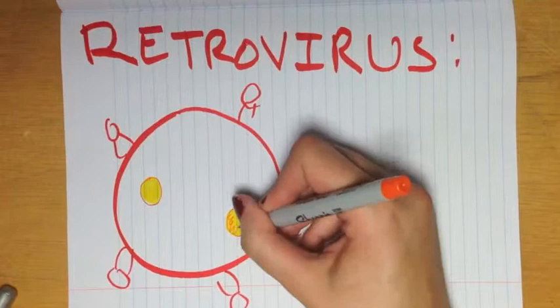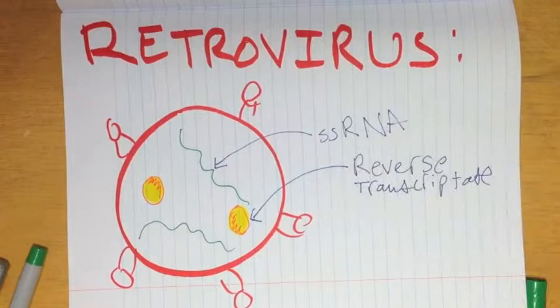Retroviruses are really special. For example, in this virus, there are two molecules of the enzyme reverse transcriptase, along with two molecules of SS RNA, single-stranded RNA. And what reverse transcriptase does is it takes this RNA and converts it to double-stranded DNA.